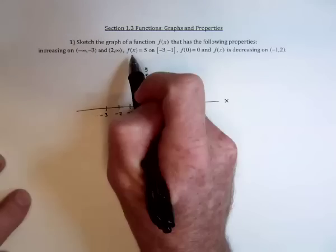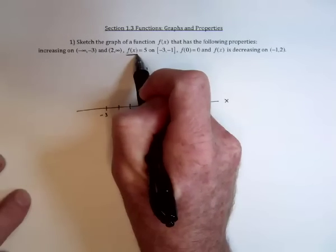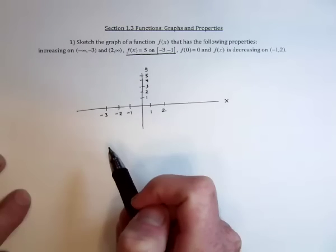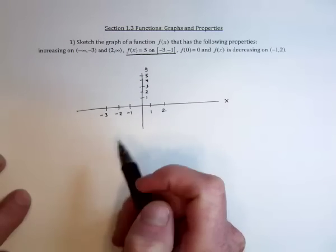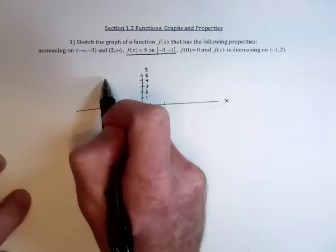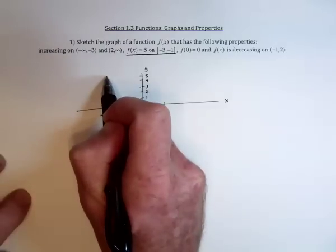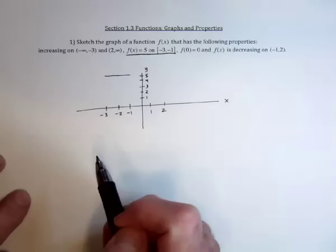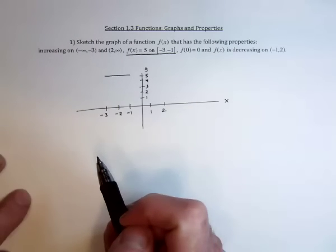Well, one that really stands out is that the function value is 5, or the y value is 5, for the whole interval from negative 3 to negative 1. So it's at a value of 5 up here from negative 3 to negative 1. There's part of it.